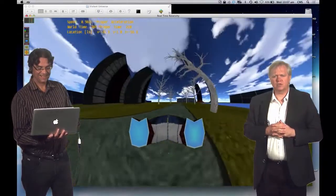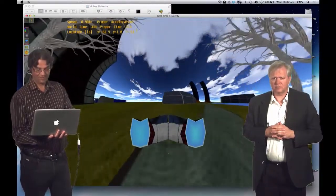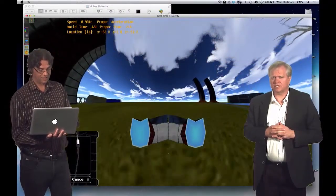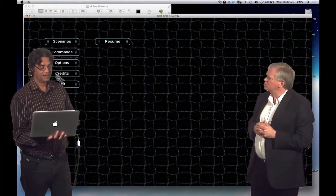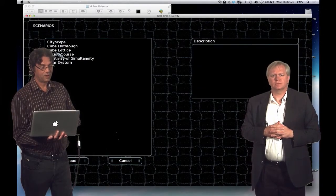Now Craig, my understanding is that you have also some other worlds. That's right. For example, one that has a bunch of cubes where you can get a sense of what things look like. Yes, that's fascinating, yes. So I call it the cube lattice.